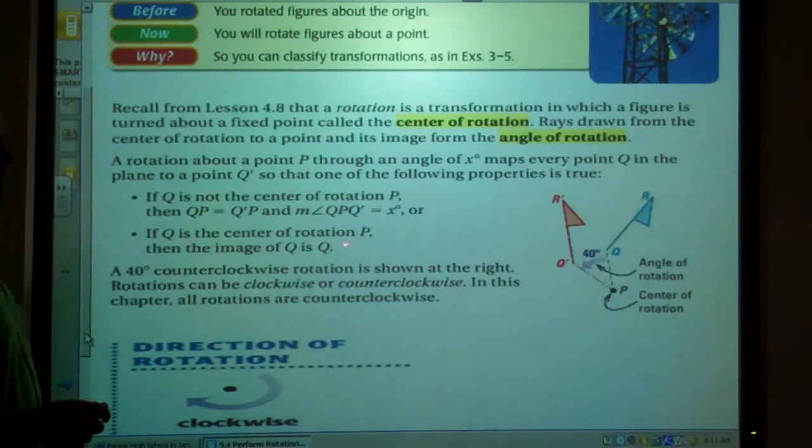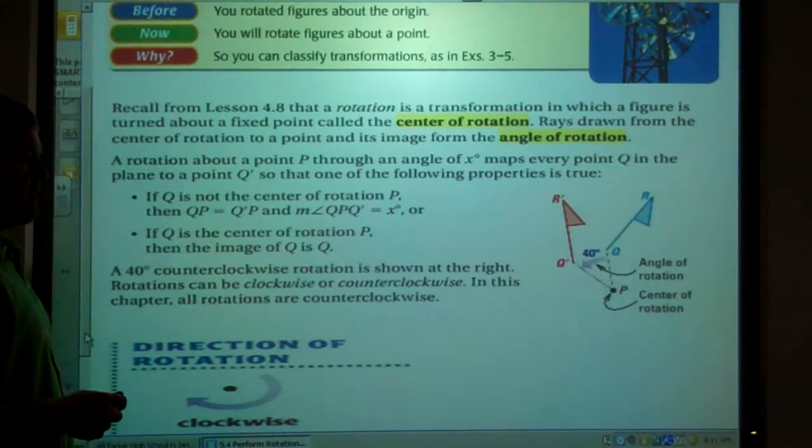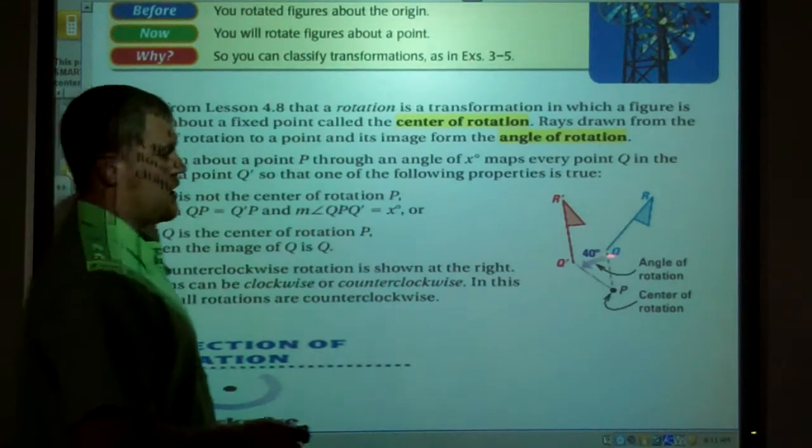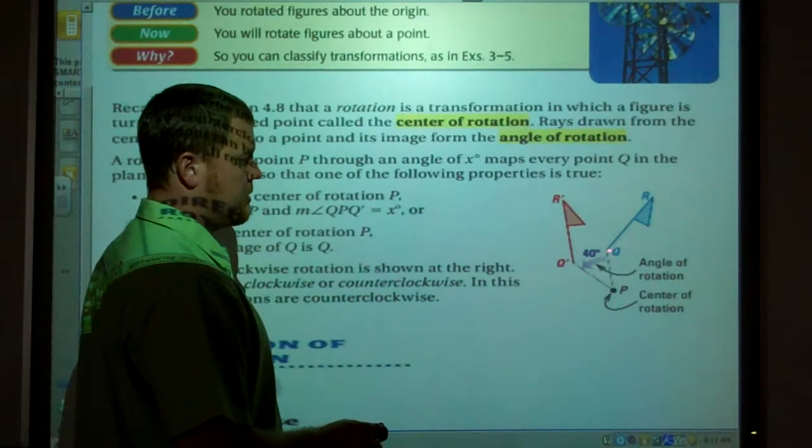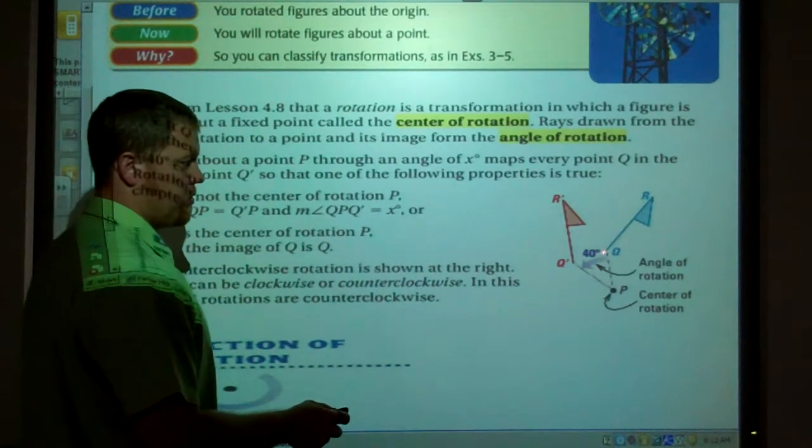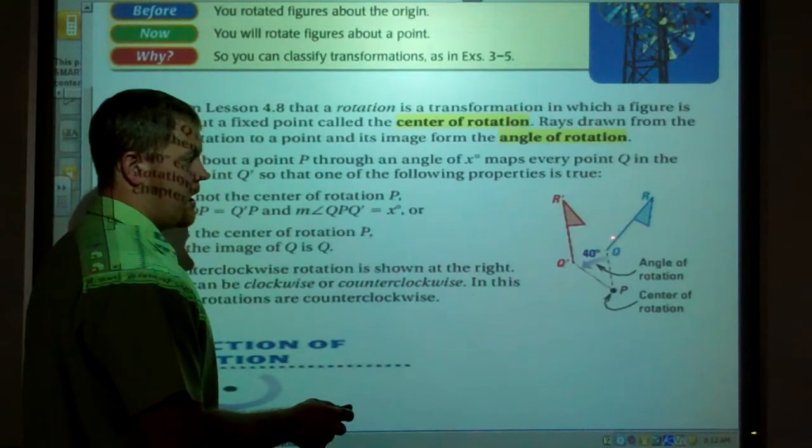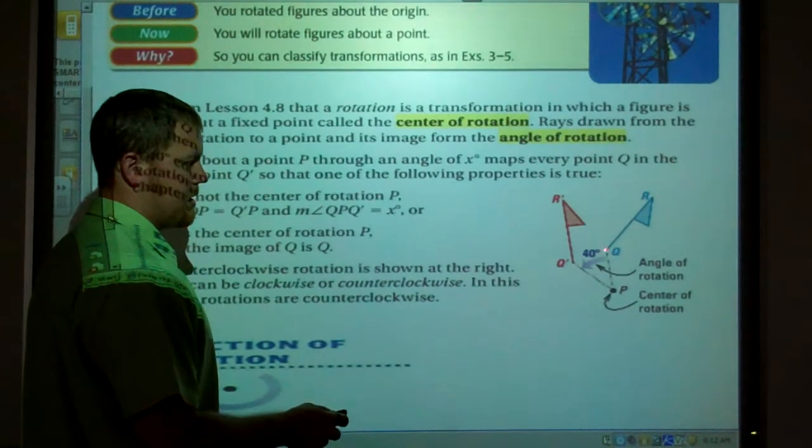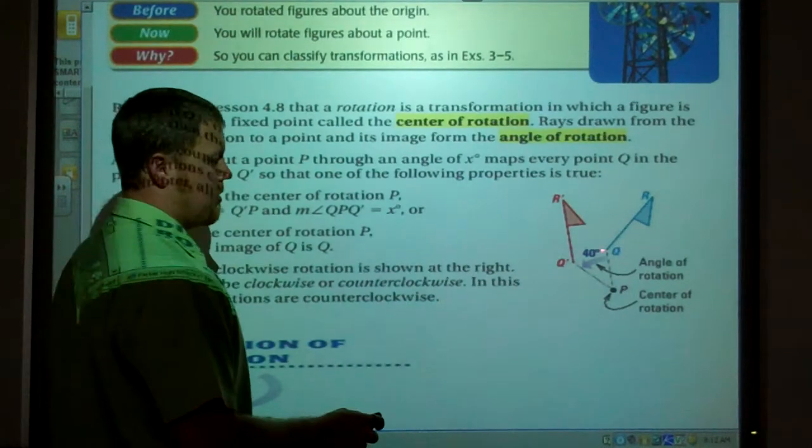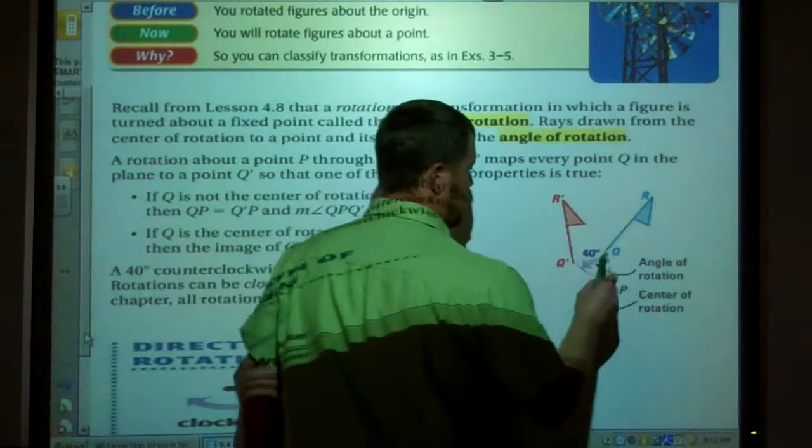Or if Q is the center of rotation P, then the image of Q is Q. Meaning if point Q is the point of rotation, Q and Q' are the same points, because you'd be rotating on that fixed point there, and your angle will be between this segment here and this segment of your image coming off right here.